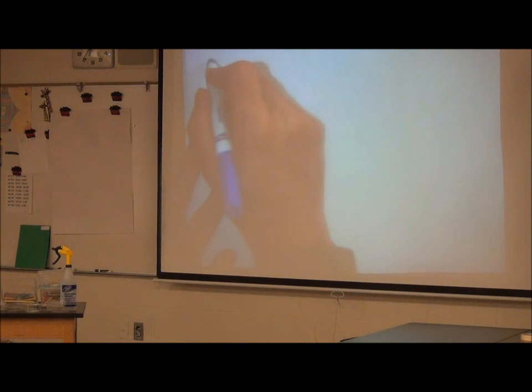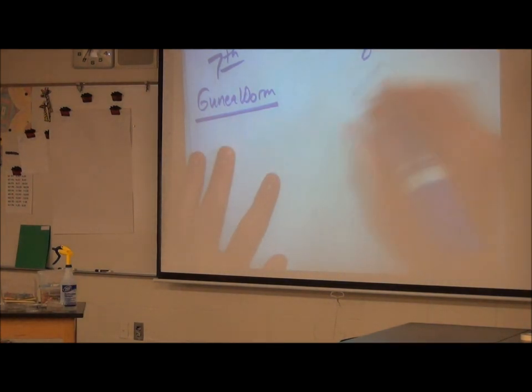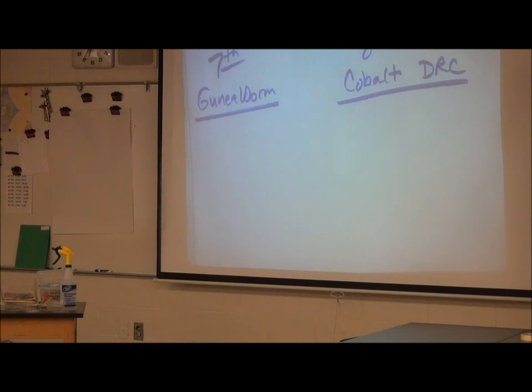Next, same idea. Seventh grade, you need to be familiar with the guinea worm story. Okay, so watch the video online if you need that. So be familiar with the guinea worm. And you'll be given four statements. You have to choose the one that's not true. So three of the statements will be true. One will be not true. Eighth grade, you're going to have to know the story of cobalt and the DRC. Same thing. I'll give you four statements. Three of them will be true. One of them will be false. You have to identify the false one. So that will be worth just a few points.